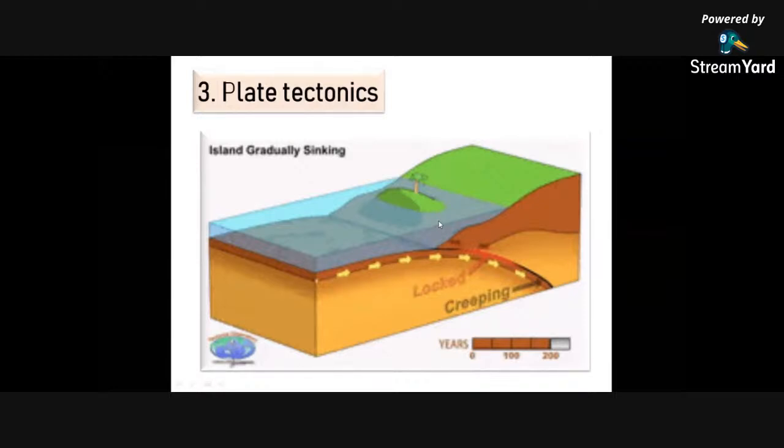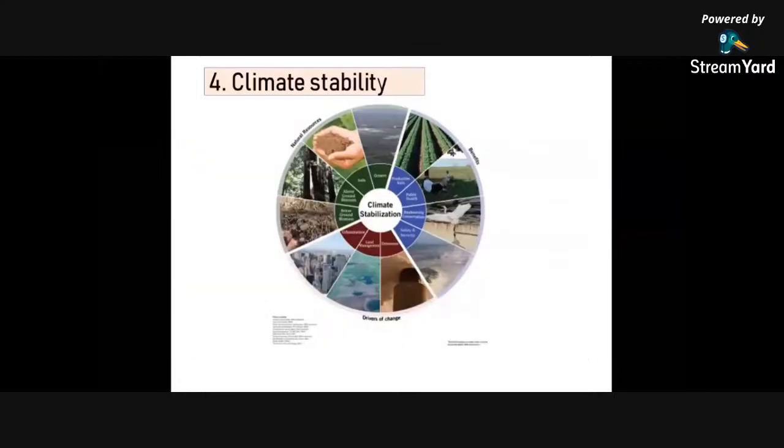Earth has a nickel-iron core which produces its magnetic field. Materials on Earth, including its water and atmospheric gases, are contained inside because of the magnetic field. Materials from the Earth's interior are circulated to its surface through volcanic activity, geosphere movement like earthquakes, or at hot spots and plate boundaries. Next is climate stability.